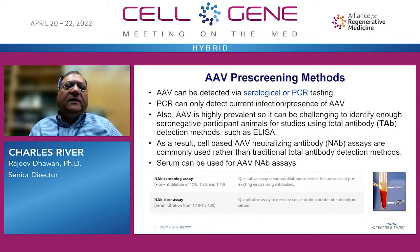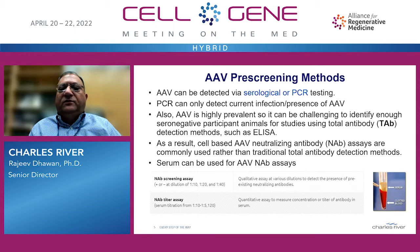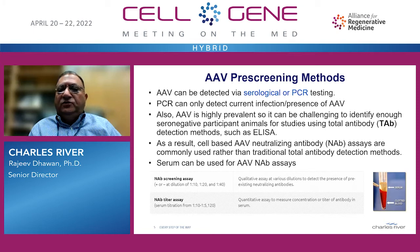How do we detect these antibodies or AAV in animals? It can be detected by serology or PCR. PCR can only detect current infection or presence of virus, whereas antibodies tell you whether the animal has been infected in the past. If we look for total antibody assays, given the high prevalence of this virus and multiple routes of transmission, it is hard to find enough seronegative participant animals. Therefore, AAV neutralizing antibody assays, which are cell-based assays, are commonly used for screening.